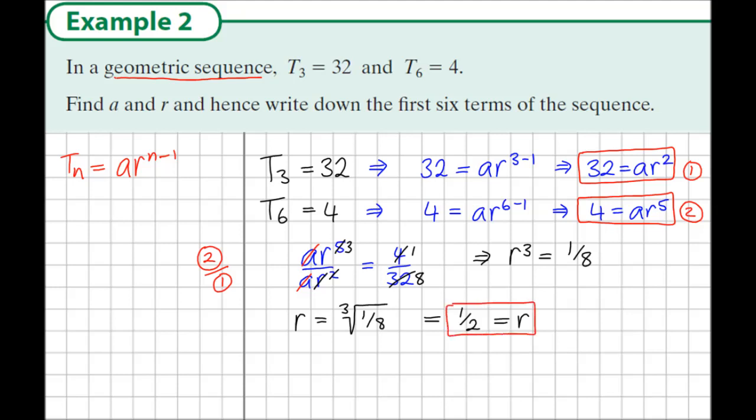Now we need to find a, but since we know the value of r, let's substitute this value that r = 1/2 into one of the given equations. Let's go for equation 1. So rewriting equation 1, we have a·r² = 32, which tells us a times (1/2)² = 32.